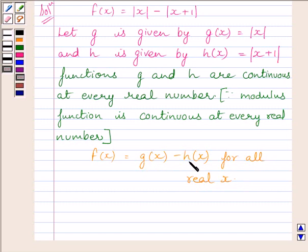Now, we know g and h are continuous functions at every real number. So, this implies g minus h is also continuous at every real number.